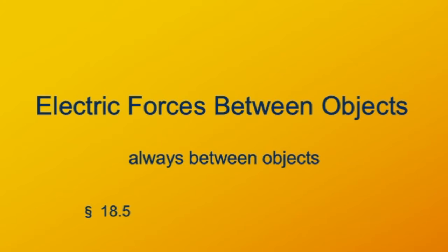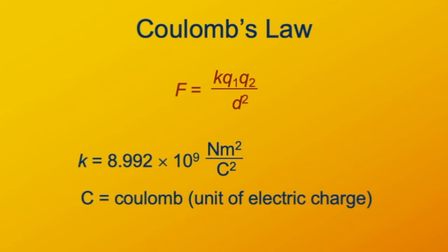Let's look at the force between charged objects — always between objects. Newton's third law applies to the electric force just as it does with any other force, and any force exerted on one object has to be exerted by another object. The force is actually an interaction between the objects. Here's the formula known as Coulomb's Law. It tells us the force F between two objects, one and two. Q1 and Q2 are the electric charges of those objects, and K is a proportionality constant.